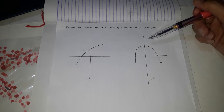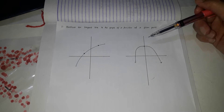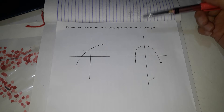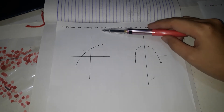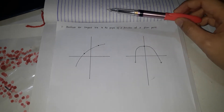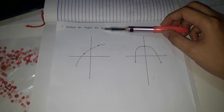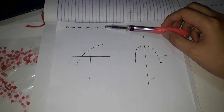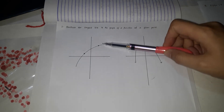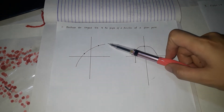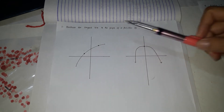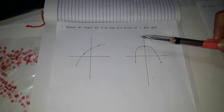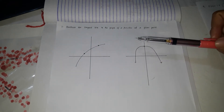The first thing we need to understand is the meaning of the tangent line. In a circle, the tangent line is a line that intersects the circle at exactly one point. However, if it is not a circle, sometimes the tangent line would intersect at exactly two points.